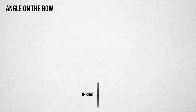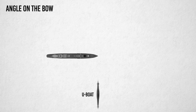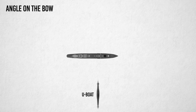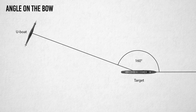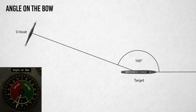Bow right means that the target is travelling from left to right from the U-Boat's perspective. If the angle on bow is greater than 90 degrees, the target is moving away from the U-Boat.